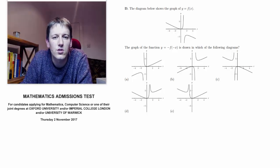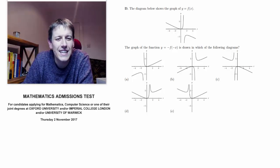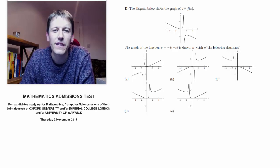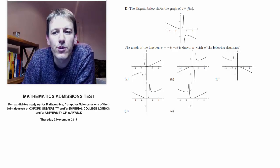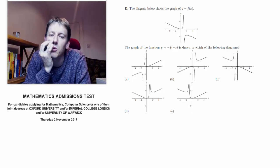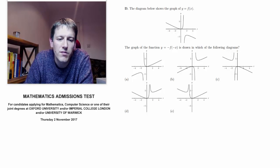Okay, this is the short answer question D from the maths admissions test from 2017 for Oxford, Imperial and Warwick. We're given a graph of y equals f of x and we're told that one of the graphs below is y equals minus f of minus x.